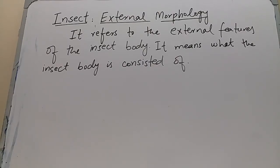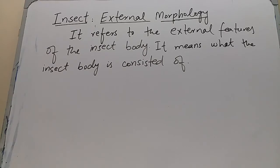Insect external morphology. External morphology refers to the external features of the insect body — the physical form or structure of the insect body, what the insect body is made up of.